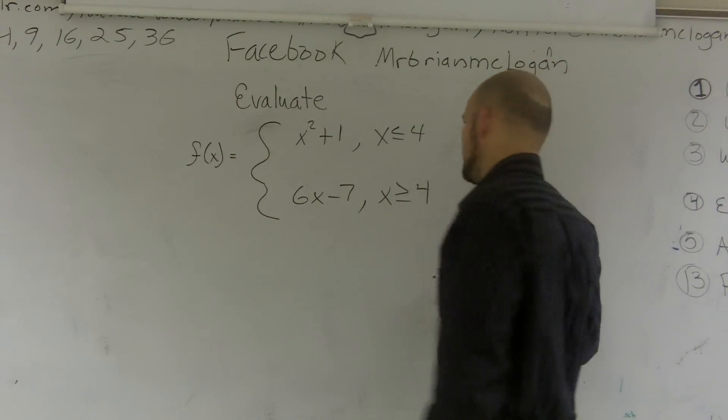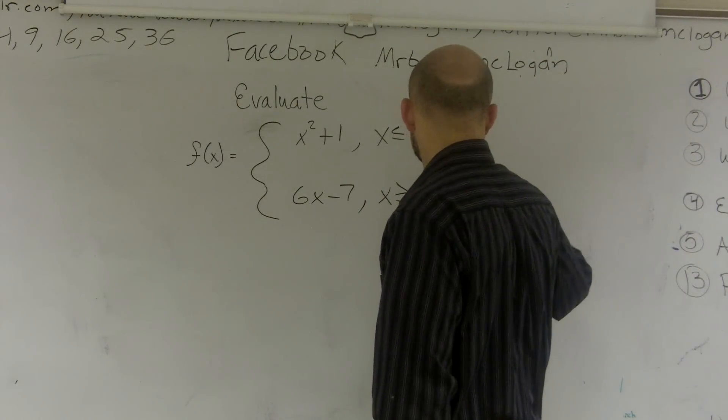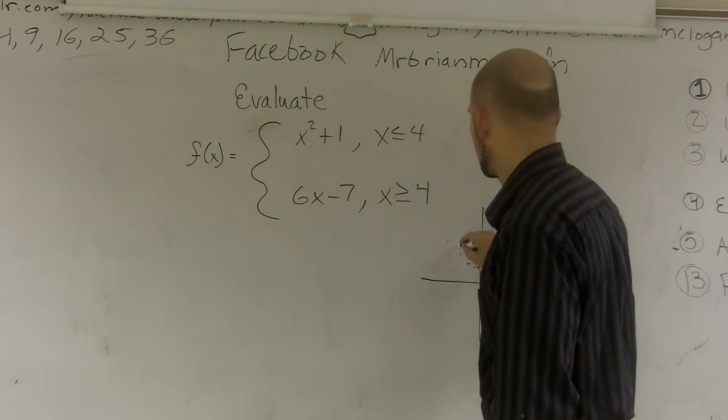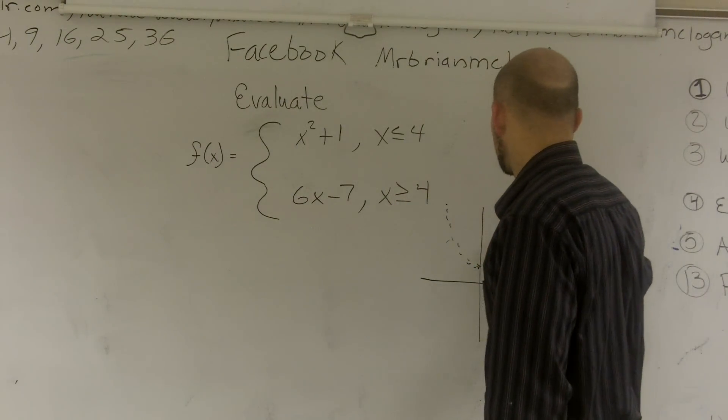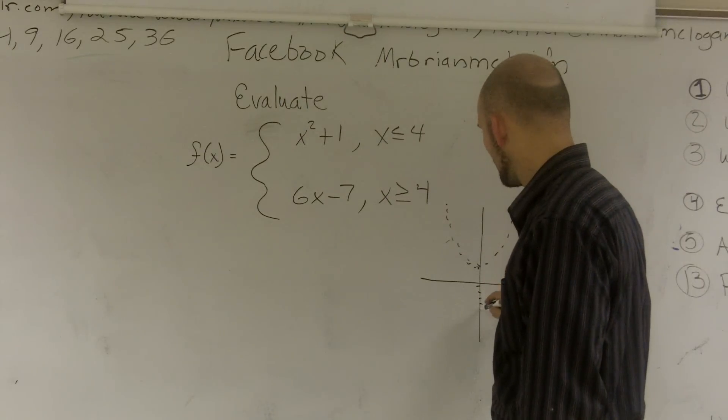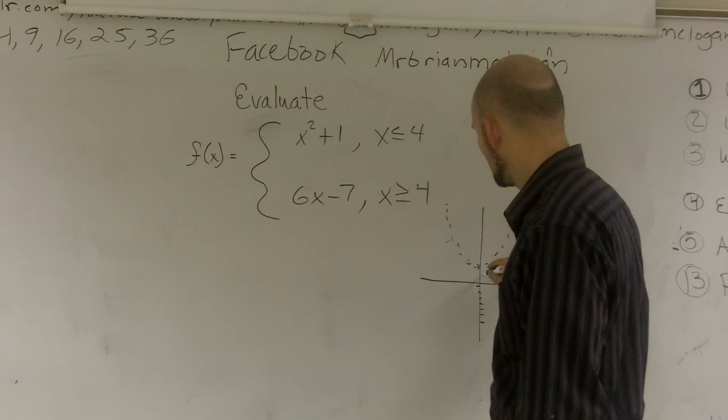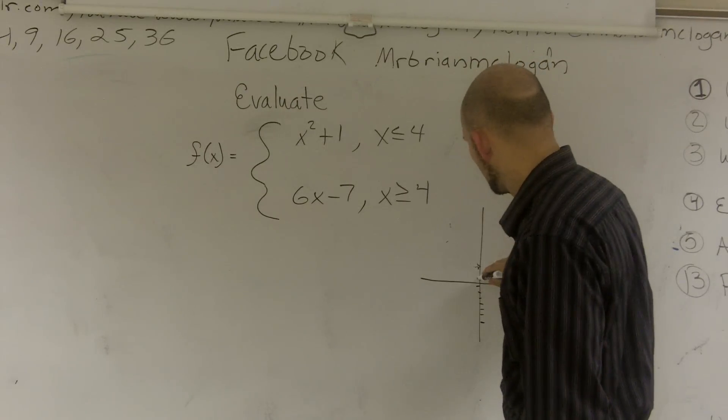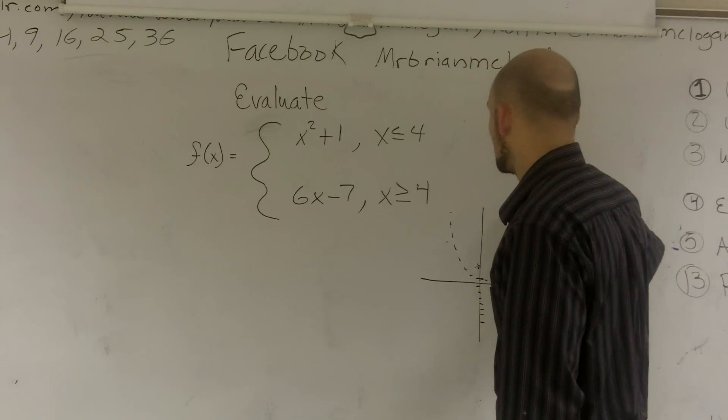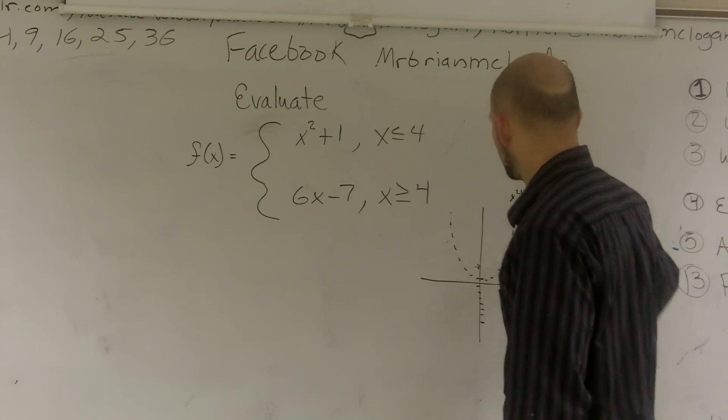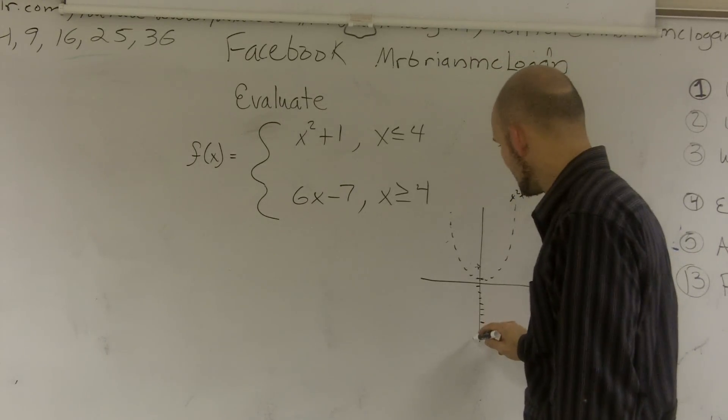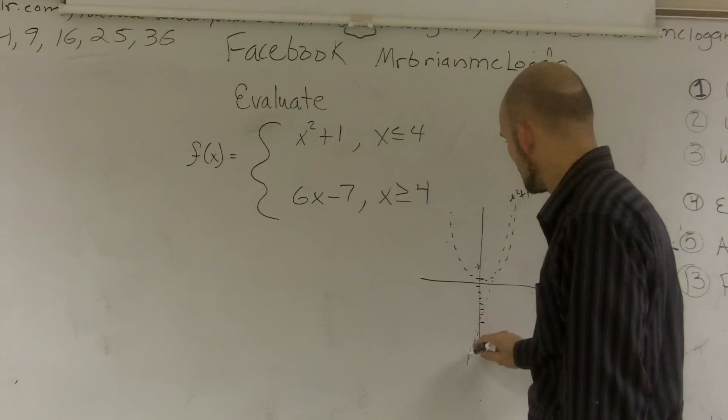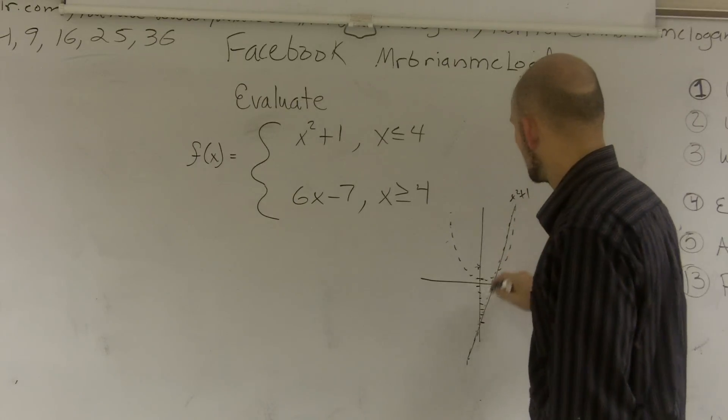So if I was actually going to even draw this, I could actually even plot this graph real quick. x squared plus 1 is going to look something like this, right? And then minus 7, 1, 2, 3, 4, 5, 6, 7, well, let's pretend that's 1. So that's what an x squared function looks like, that's x squared plus 1, and this, 6x minus 7, would look something like that.